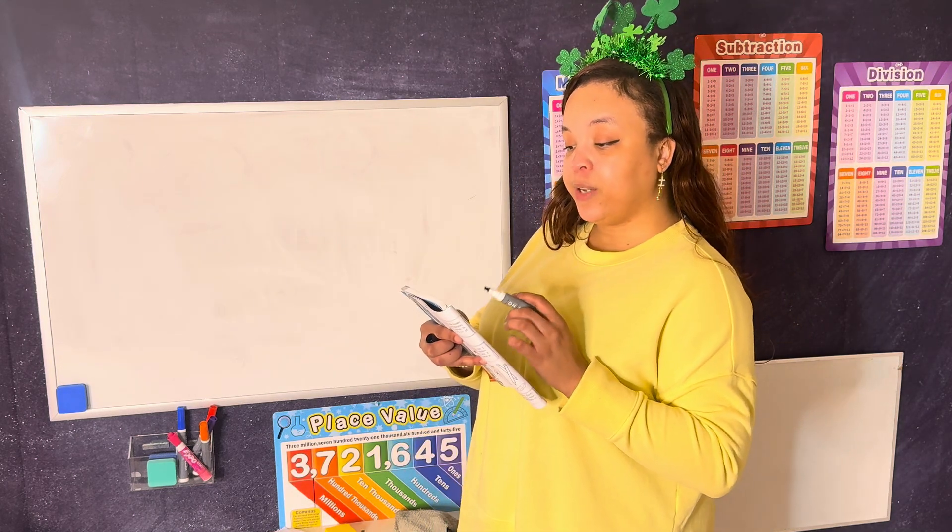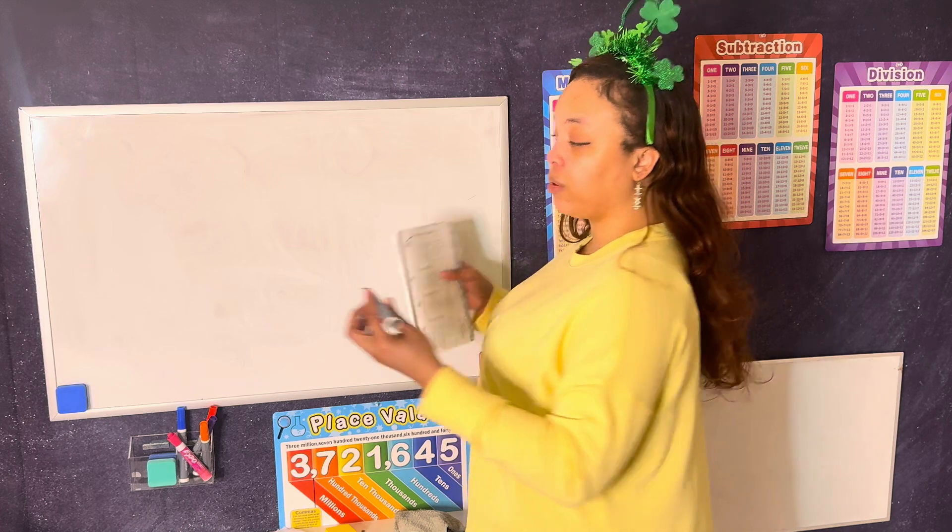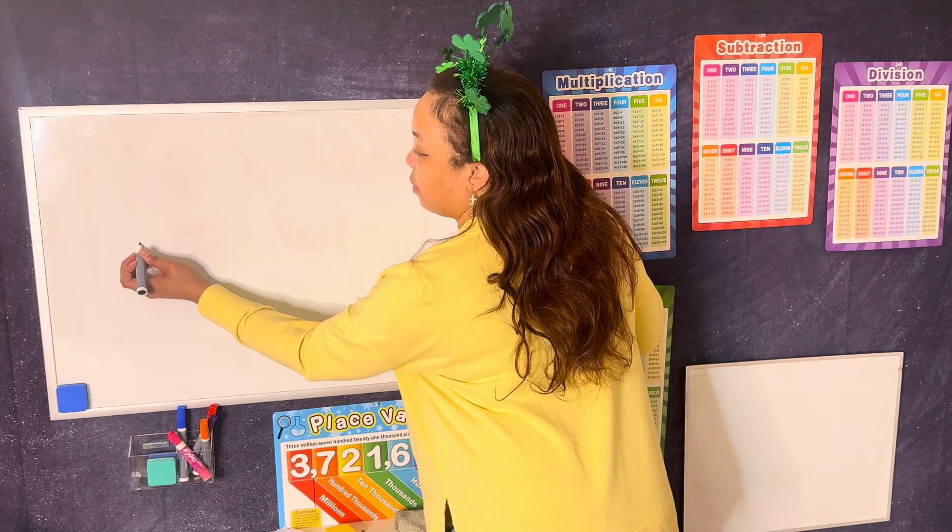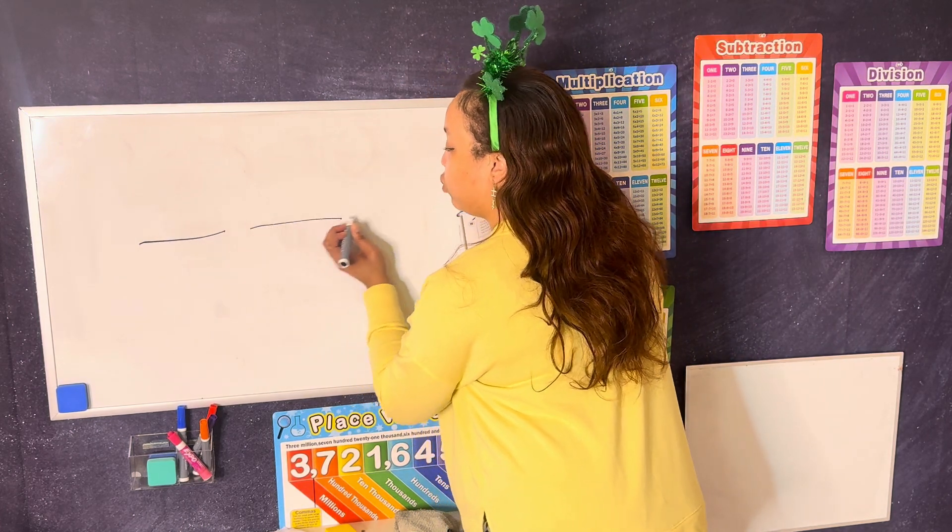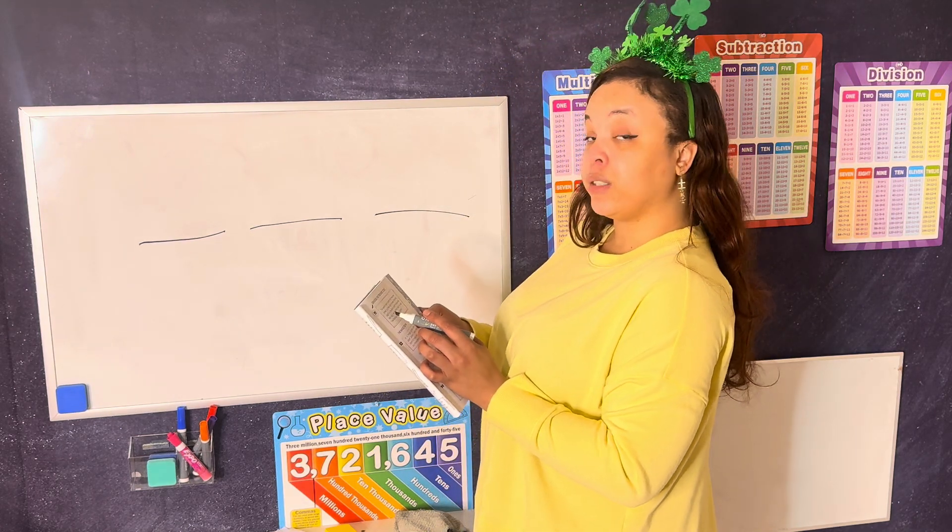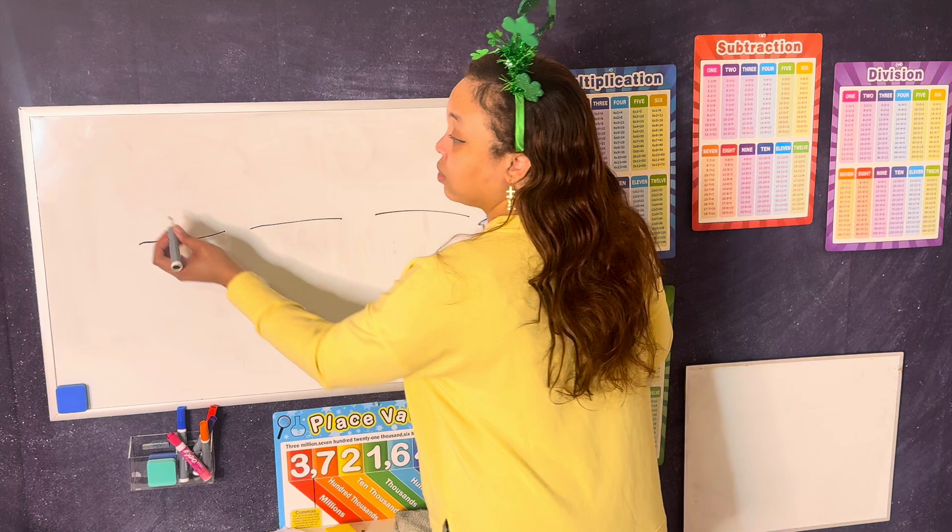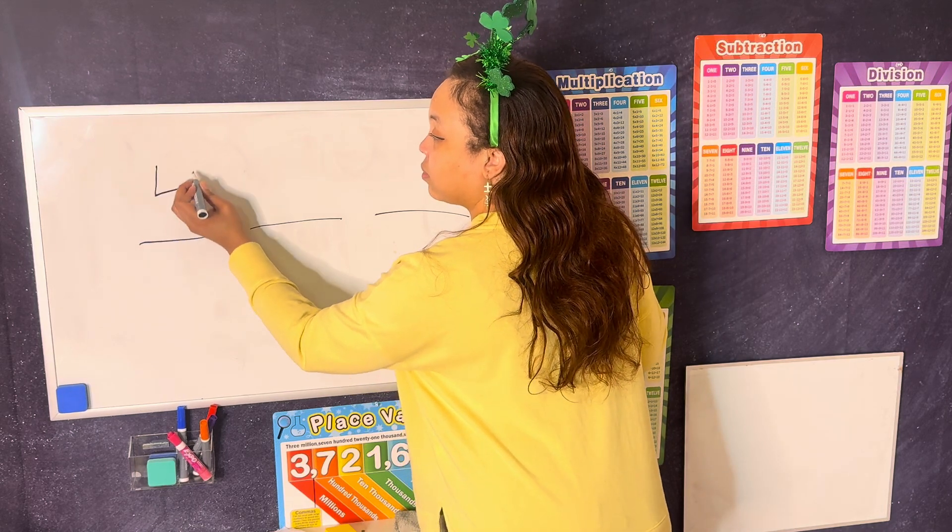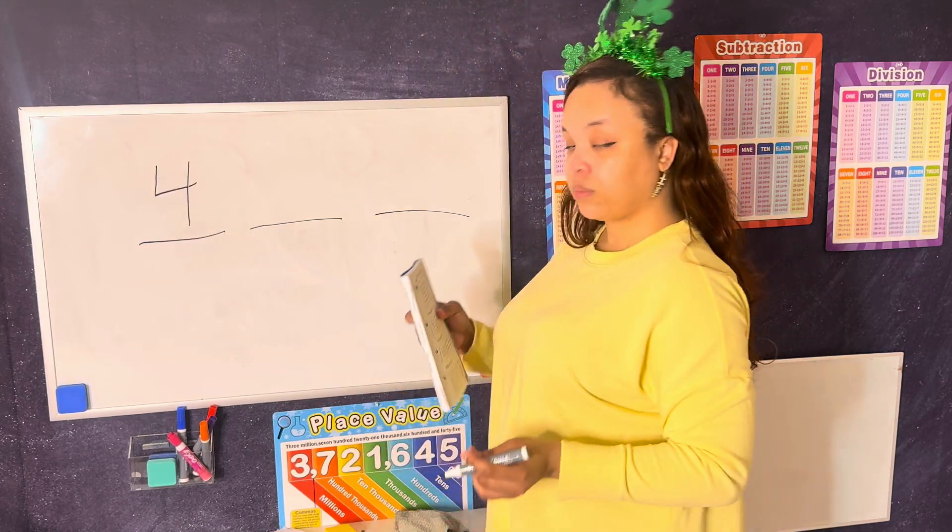Alright. So it says the secret code to open a treasure chest is a 3 digit number. That means we're going to have 1 blank, 2 blank, 3 blanks. Okay. The first digit is 4.